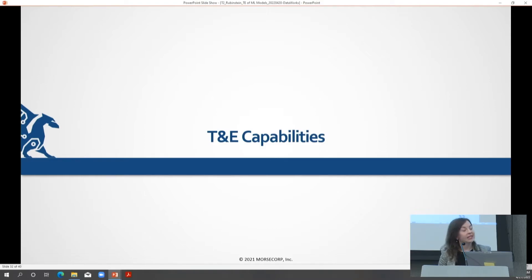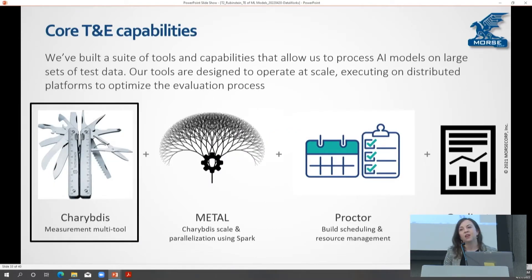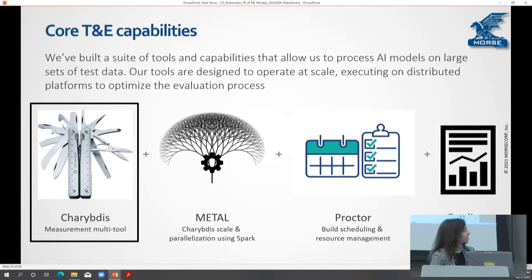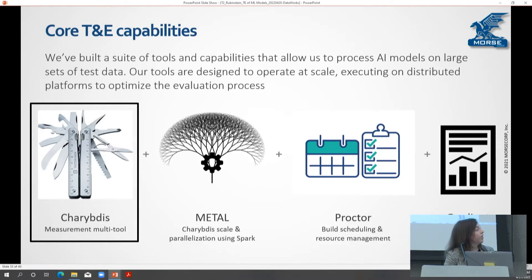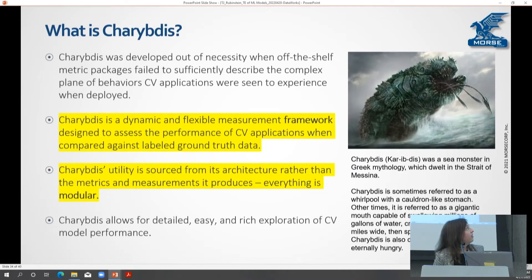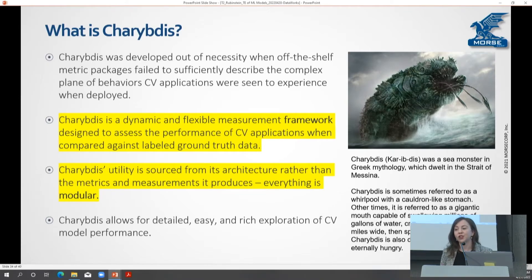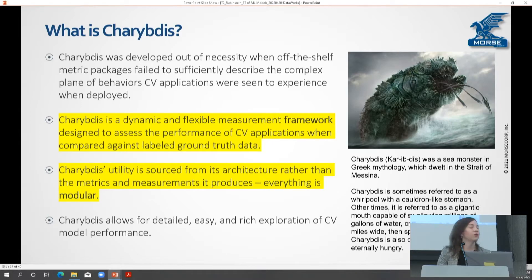Now I'm going to talk about some T&E capabilities for how you could actually implement those metrics successfully from a T&E-as-a-service or enterprise-wide T&E perspective. At MORSE, we've built a number of tools: we have Charybdis, our Swiss Army knife of T&E capabilities; Metal, which enables Charybdis to run using parallelization, so really quickly; Proctor, which does scheduling and resource management; and Gradient, which turns T&E results into visuals. The name Charybdis comes from the sea monster that is eternally hungry — you can think of our capability as eternally able to consume models and spit back out T&E results.